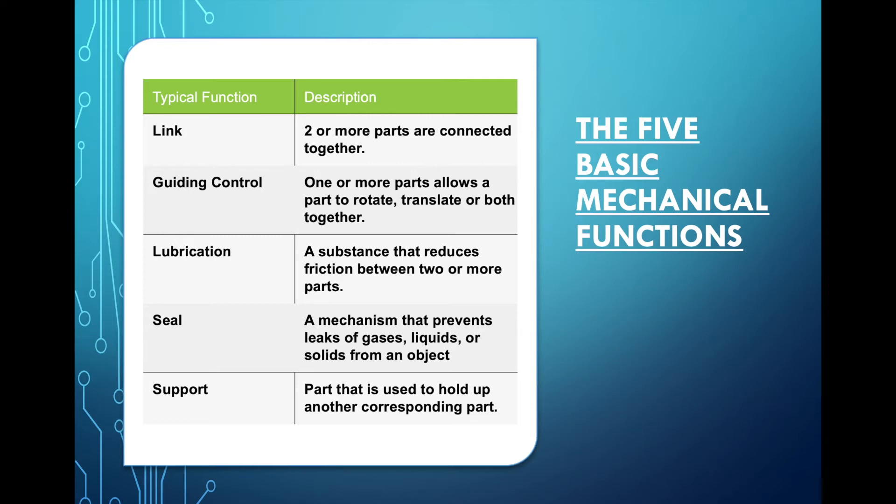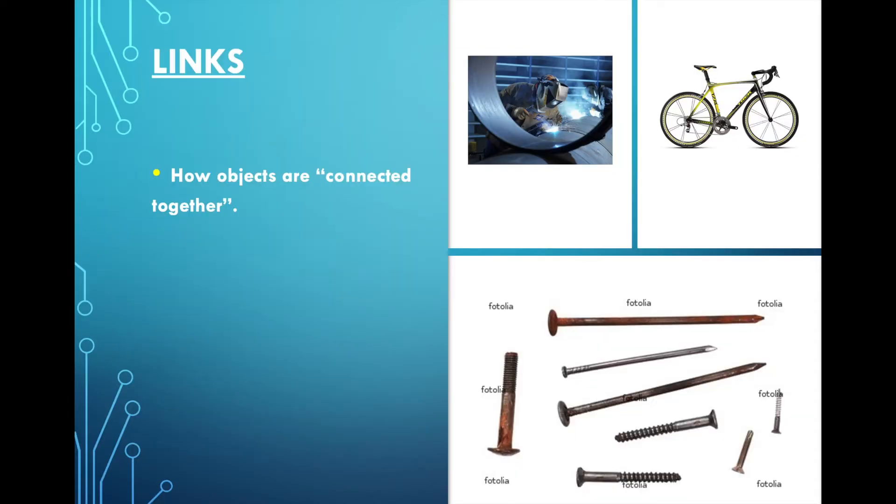So now we're going to be looking at more specific examples. All right, so what's a link? We said something that holds parts together. So we have here examples we could weld two pieces of metal together. So we are basically melting a substance that is making everything hold together. So we're linking the two pieces together.